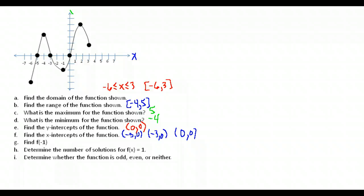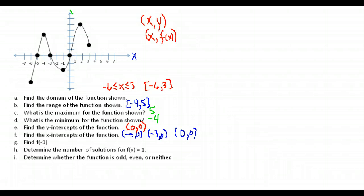The next question uses function notation: find f(-1). Remember, every point on a graph can be written as (x, f(x)) instead of (x, y). To find f(-1), we go to the point on the graph where x is negative one. That point is (-1, -2), so our x is negative one and f(-1) equals negative two.